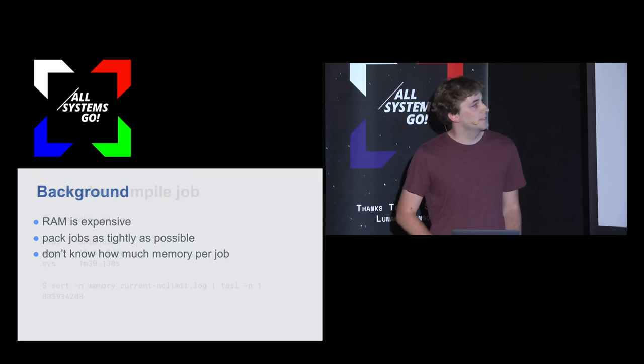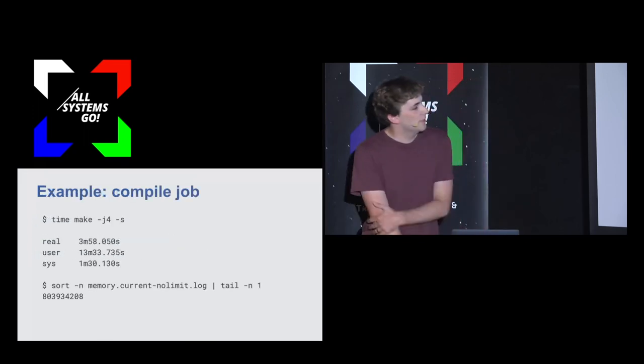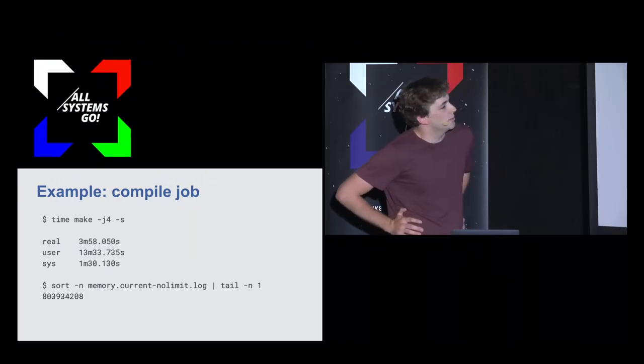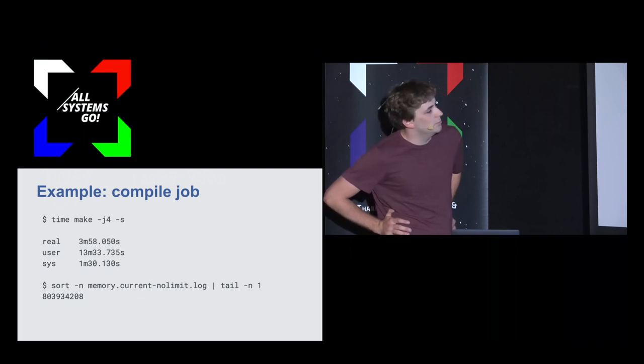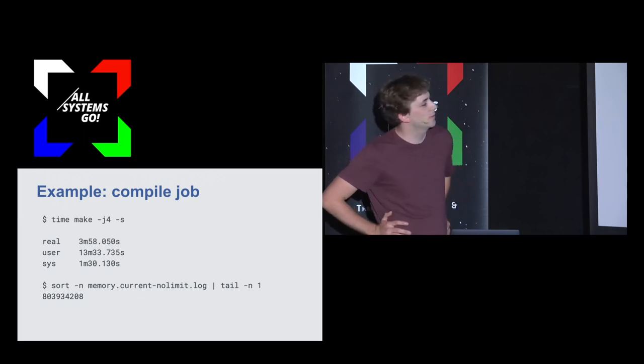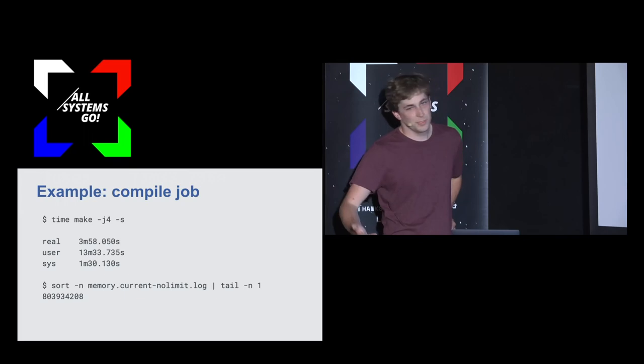I'm going to show this with an example. Here's a simple kernel compile job — because I'm a kernel developer. I put it into a cgroup, not for control, just for accounting to track what it allocates, then let it run. While it runs, I'm sampling the memory.current file of the cgroup, which gives you the total memory consumption of that cgroup. After four minutes it's done, and the peak consumption shows around 800 megabytes — that includes the compiler, source tree, everything.